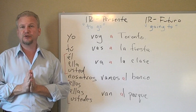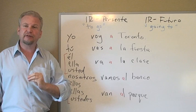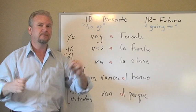Now we are going to learn one of the trickiest verbs in Spanish, but also one of the most useful verbs. That's a small little verb called IR. IR is the verb 'to go.' We talk about that all the time — I go here, I go there.